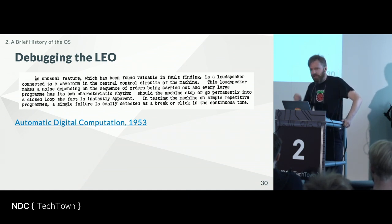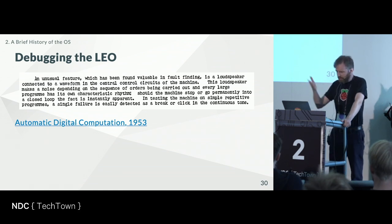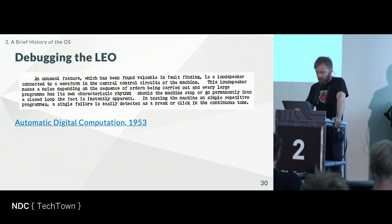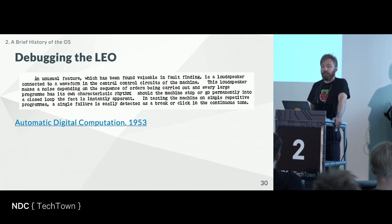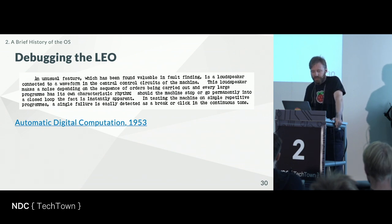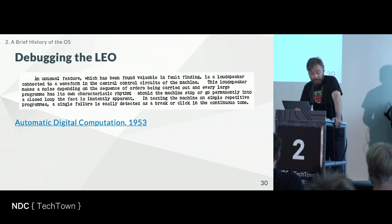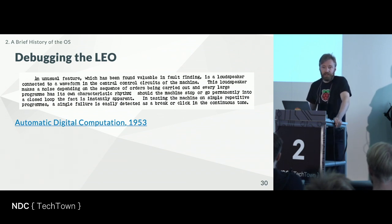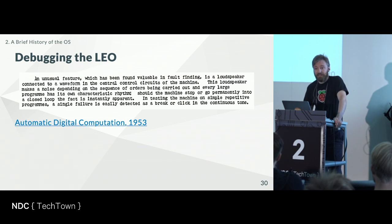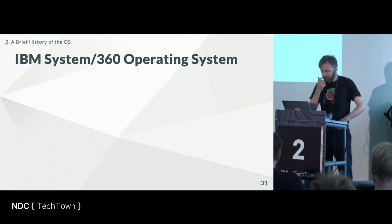By the time you get to the LEO 3 it can run 12 different jobs at the same time. Here's a quote from 'Automatic Digital Computation,' 1953: 'An unusual feature which has been found valuable in fault finding is a loudspeaker connected to a waveform in the central circuits of the machine. This loudspeaker makes a noise depending on the sequence of orders being carried out, and every large program has its own characteristic rhythm.' If nothing else, I hope you'll go away and think about plugging a speaker into the central circuits of your machine.